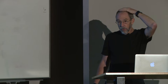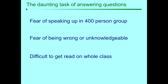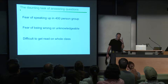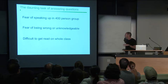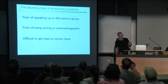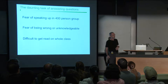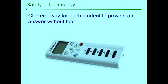One of the problems of asking students questions — even in this situation — is there's a real fear of speaking up in a 400-person group. Even gifted professors struggle to draw people out in large groups. I'm a very verbal person, but if I'm in an audience of 400-600 people, I ponder carefully before asking a question. There's also a fear of being wrong or seeming unknowledgeable, and it's just difficult to get a read on the whole class. Usually only a few people raise their hands. The solution that emerged is the venerated clicker.